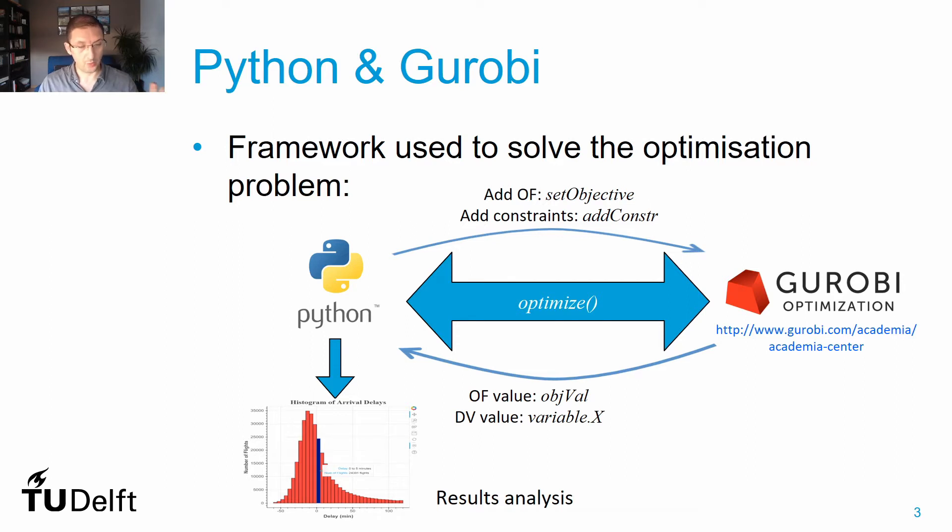The way that you interact between Python and Gurobi is via a set of commands that you add to your script in Python. For instance, if you want to describe your objective function you write setObjective, while if you want to define a new constraint you write addConstraint or addConstr.